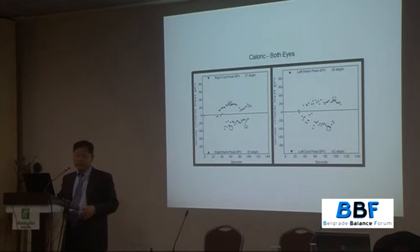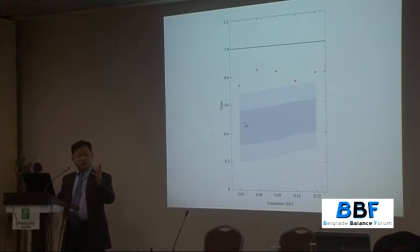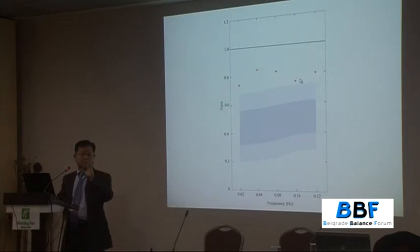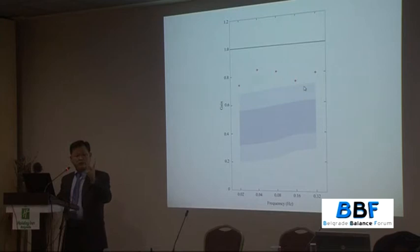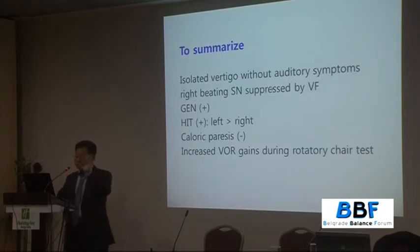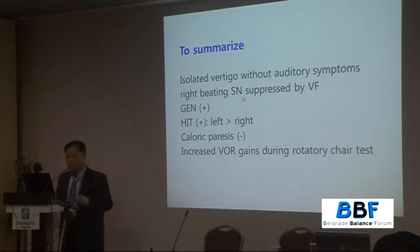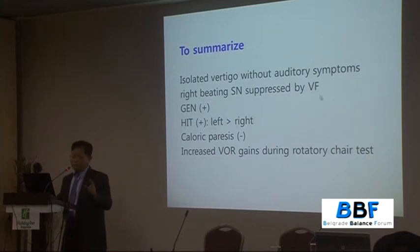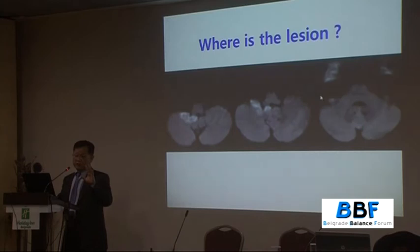Calorics were symmetric. Even more interesting, the VOR gains were increased during the rotatory chair test. So this lady showed impaired VOR during head impulse, but normal calorics and increased VOR gain during the rotatory chair test — showing dissociated patterns of VOR abnormalities. To summarize: isolated vertigo with spontaneous right-beating nystagmus, unusual gaze-evoked nystagmus, positive head impulse test in both directions, no caloric paresis, and increased VOR during the rotatory chair test.